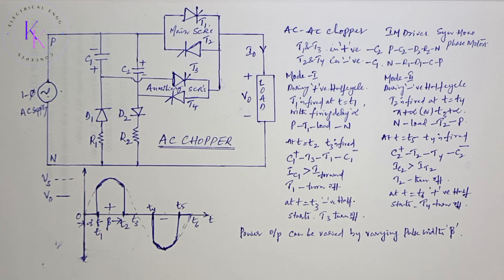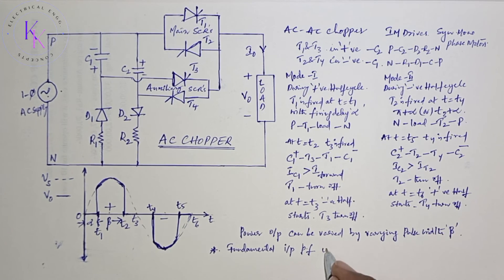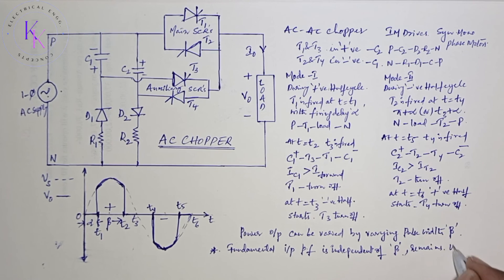When we have transformers, why do we need AC to AC chopper? The advantage of AC chopper is that the fundamental input power factor is independent of the pulse width beta, and the input power factor remains unity.